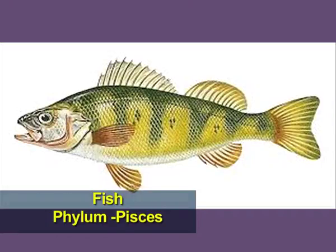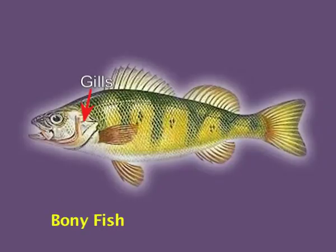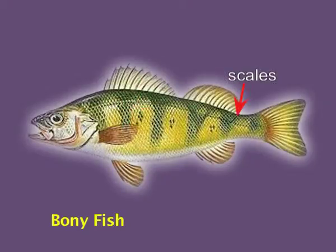The third example is a bony fish. Fish have a streamlined body to offer least resistance when moving in water. They have gills covered by an operculum, which helps in respiration. Fins help them move in water, and scales protect the body from entry and exit of water.